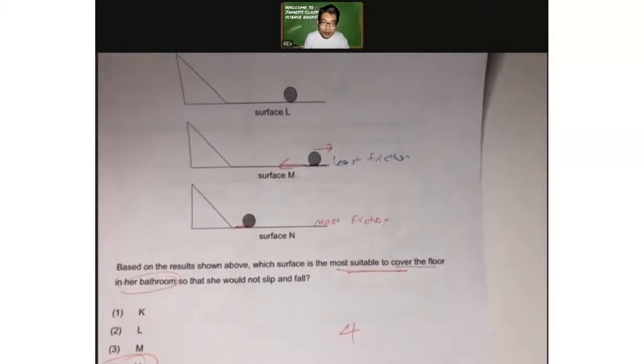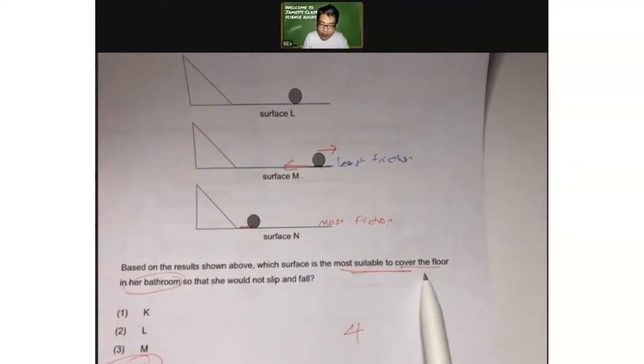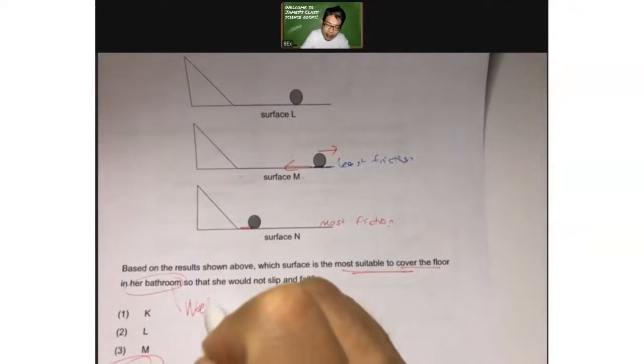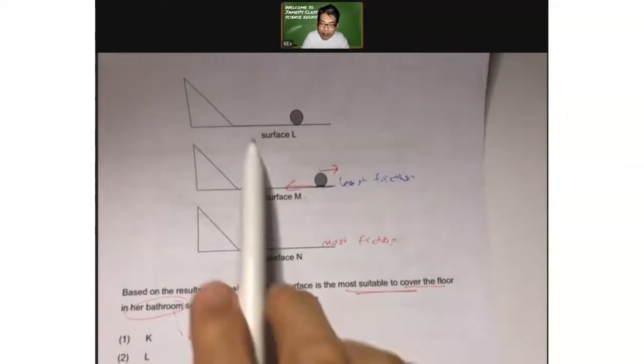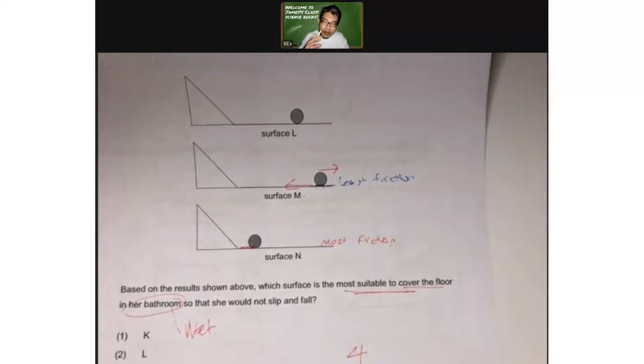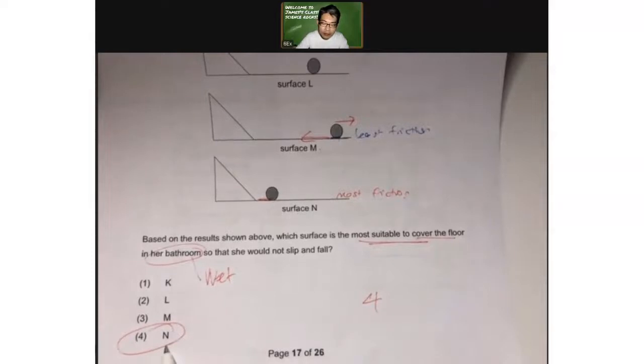So if we want to choose a material, L, M or N, to cover the floor of a bathroom, and bathroom is always quite wet and it could be slippery, which material will you choose? Of course you will choose the material that is the roughest surface. Now I can't tell from the picture that it's rough, but as you know, a rough surface will help to generate the most frictional force when the surfaces are in contact. So I will choose N.